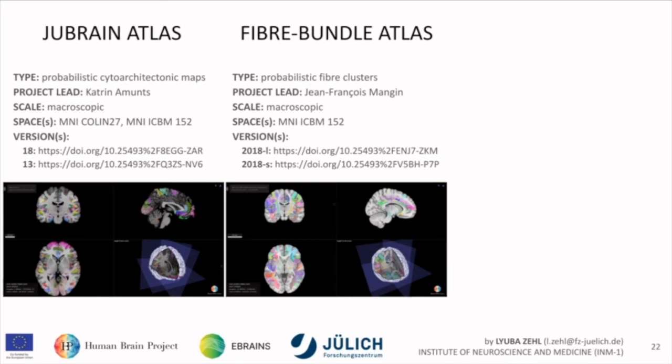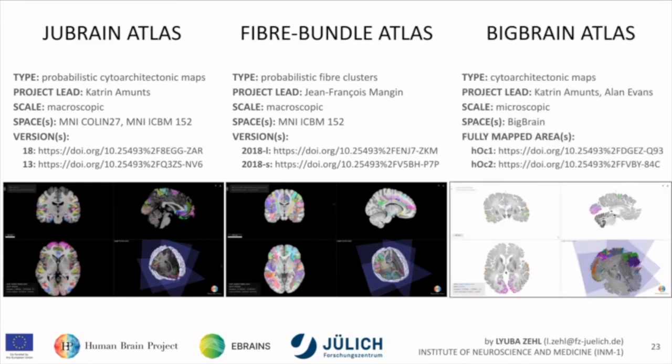Then there's the BigBrain atlas, which is in development. The only areas currently fully mapped by the deep learning algorithm are HOC1 and HOC2, which correspond to V1 and V2. It's at microscopic resolution, with Katrin Amunts and Alan Evans as project leads. As you can see, the BigBrain and the JuBrain are of course highly related.